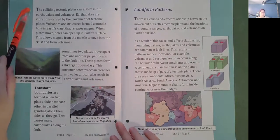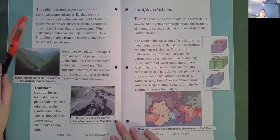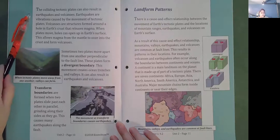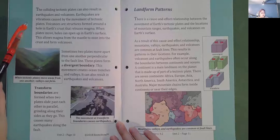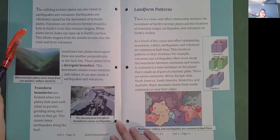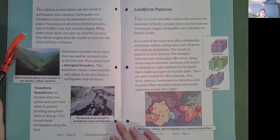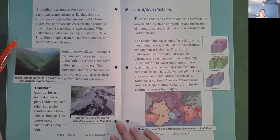The colliding tectonic plates can also result in earthquakes and volcanoes. Earthquakes are vibrations caused by the movement of tectonic plates. Volcanoes are structures formed around a hole in Earth's crust that releases magma. When plates move, holes can open up in Earth's surface. This allows magma from the mantle to ooze into the crust and form volcanoes.